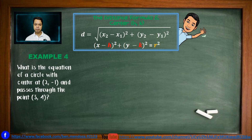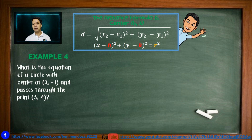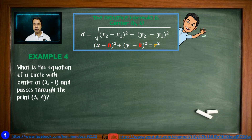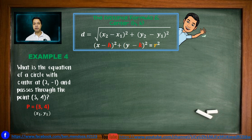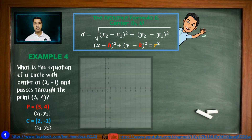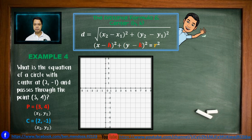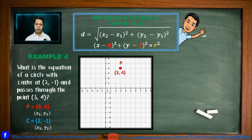Example number 4: What is the equation of a circle with center at (2, negative 1) and passes through the point (3, 4)? This is similar to example number 3. We are given the center at (2, negative 1) as our first point and point P at (3, 4) as our second point. We plot both points on the Cartesian plane.